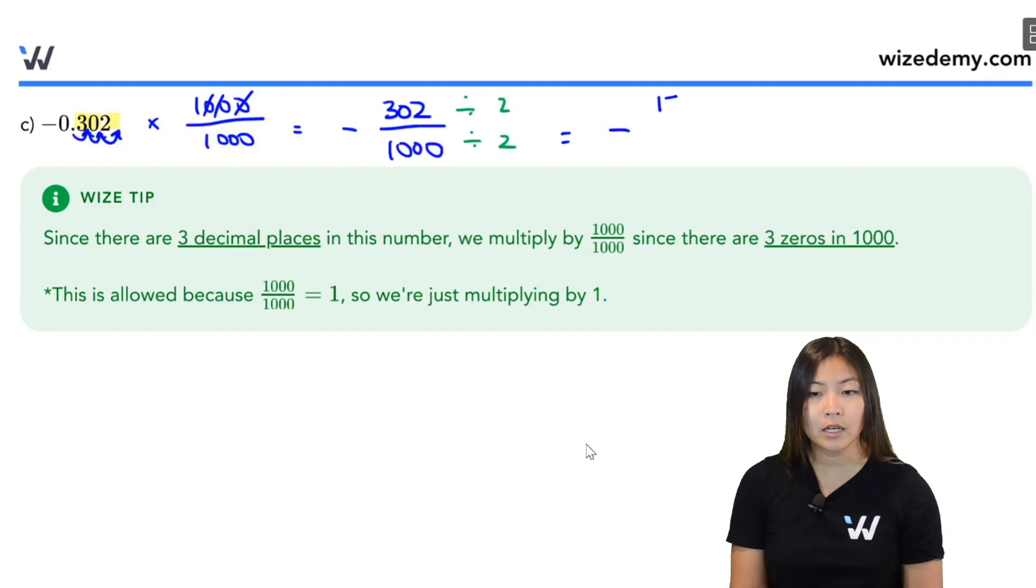In the numerator, you end up with 151. In the denominator, you end up with 500. And this, my friends, is the rational number that is the same as negative 0.302.